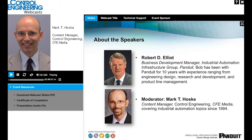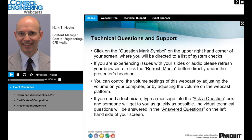Bob is responsible for the development of business cases to approve projects and programs leading to new business generation and new product introductions. He has responsibility for understanding solutions to customer problems, defining programs and new product performance, and putting forward recommendations to design, develop, and release new products aligned with the Industrial Automation Infrastructure Group's goals. Bob has been with Panduit for 10 years with experience in engineering design, research, development, and product line management. He is a graduate of Queen Mary College, University of London, with a Bachelor of Science in physics with electronics, and a PhD in reflector electromagnetics.